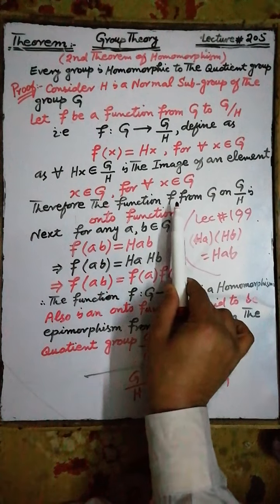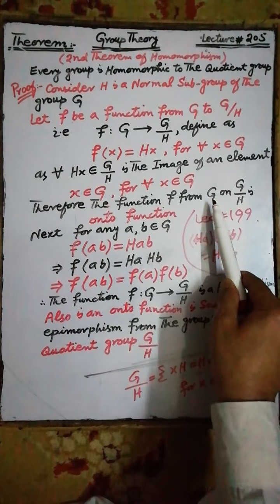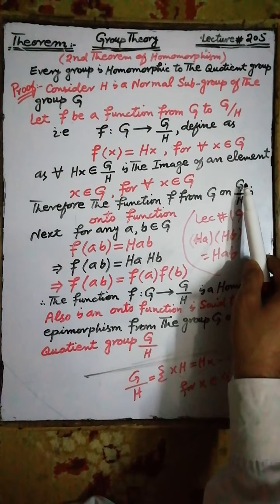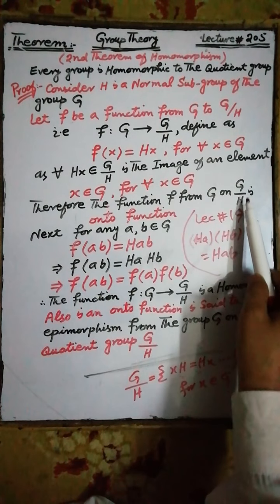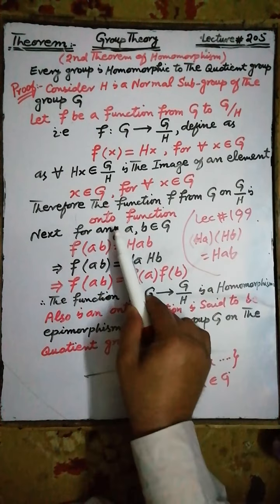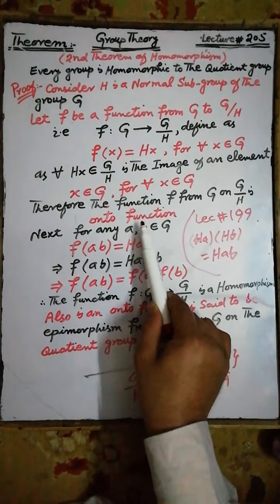Therefore, the function F from the group G to the group G by H is an onto function.